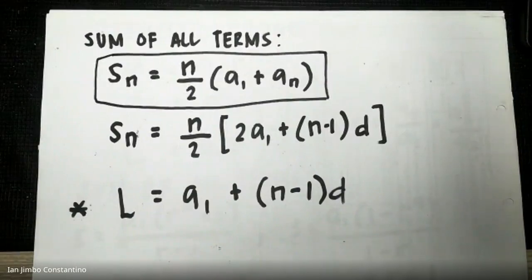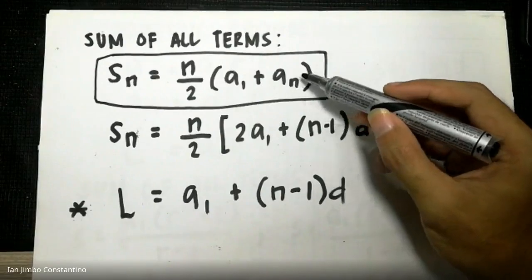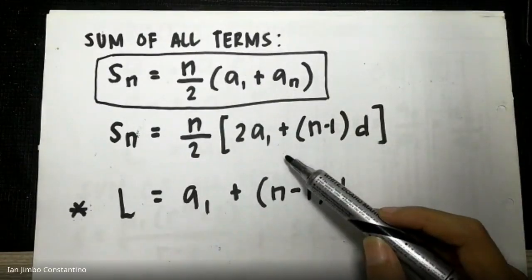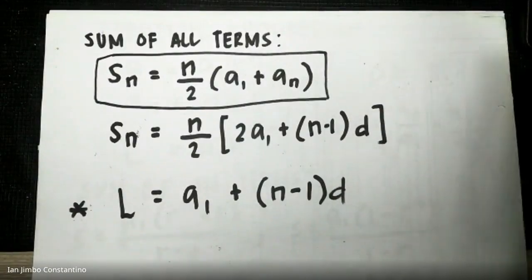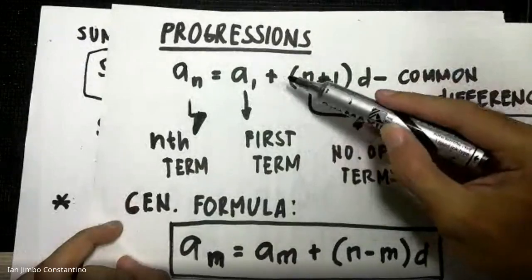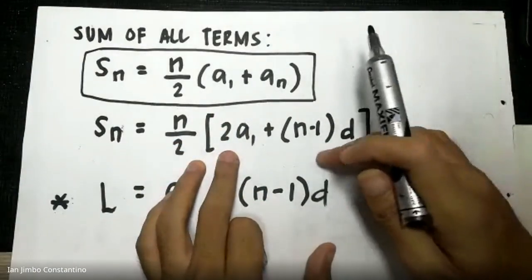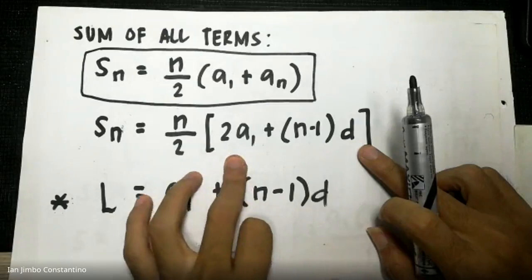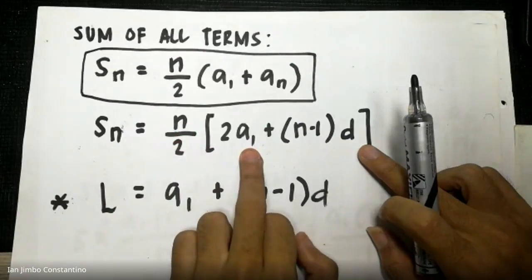But there is a limitation to this formula — what if you still need to find the last term? If the last term is already given, you can use it directly. But if you still need to solve for the last term, you might as well use the alternative formula. That is: Sn = n/2 × (2a1 + (n − 1)d). This way, even if the last term is not given, you can directly compute the sum of all terms, as long as you know the number of terms and a1.